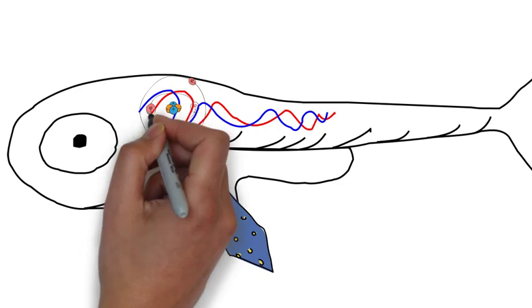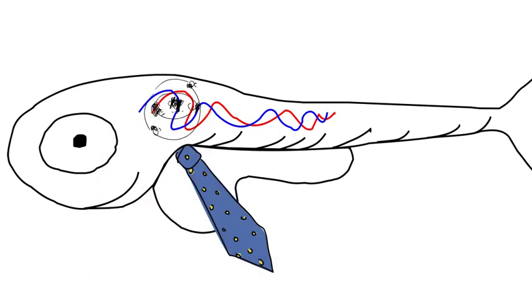When we build a personalized zebrafish model, we create a fish to have the same mutations as the patient in order to analyze the manifestation of the disease and identify optimal treatment for each individual.